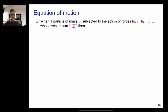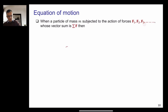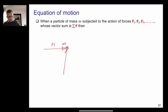So far we discussed a simple form of Newton's second law, F equals MA. Now assume a particle of mass M is subjected to multiple forces: F1, F2, and F3. In this case, one force may act in one direction, another in a different direction, and a third from yet another direction.